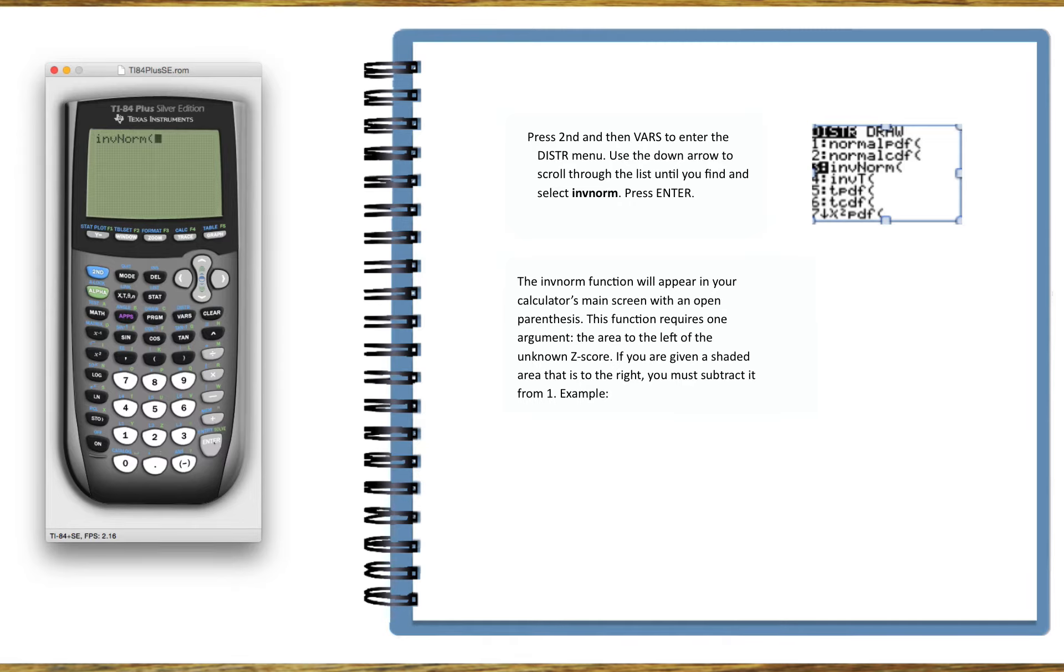So let's look at an example. The area to the left of z is 0.15, we're trying to find z. So we have INFNORM open,